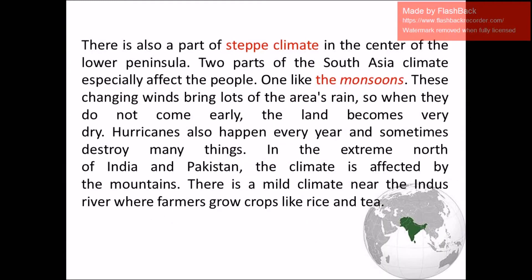There is also a steppe climate in the center of the lowest peninsula. Two parts of the South Asian climate especially affect the people. One is the monsoon — these changing winds bring a lot of rain to many areas, and when they do not come early the land becomes very dry. Hurricanes also occur every year and sometimes destroy many things. In the extreme north of India and Pakistan, the climate is affected by the mountains. There is a mild climate near the Indus River where farmers grow crops like rice and tea.